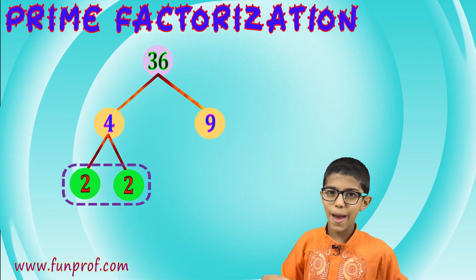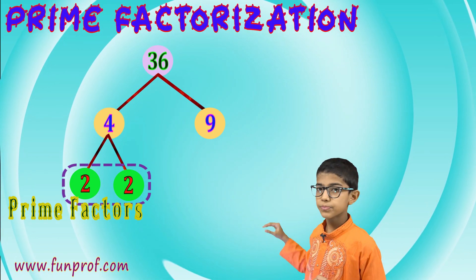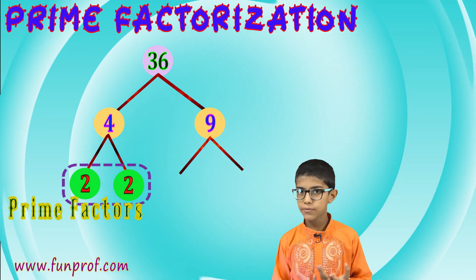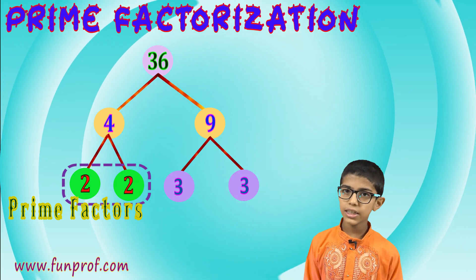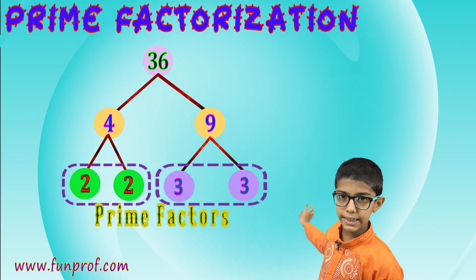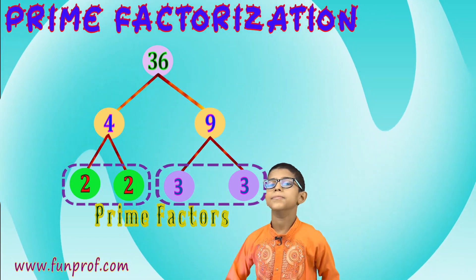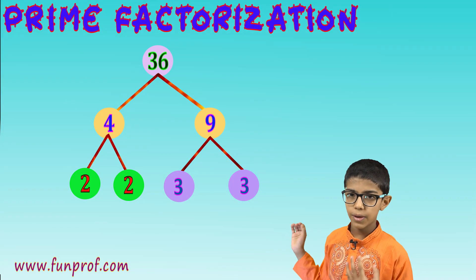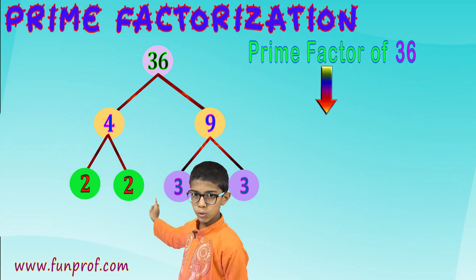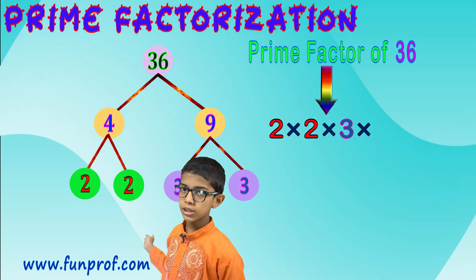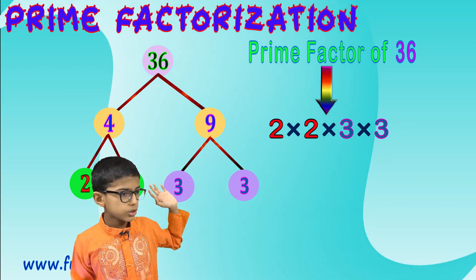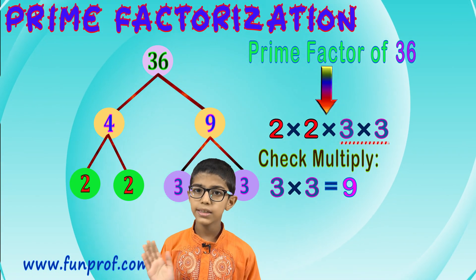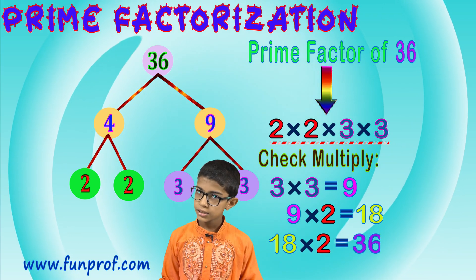Now, 4 can be divided into 2 and 2. So I will make two parts: 2 and 2. These are two of my prime factors. Now 9 can also be divided into prime factors: 3 and 3. So the factorization is complete. The prime factors of 36 are 2 × 2 × 3 × 3.